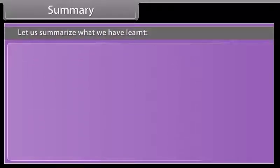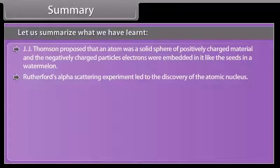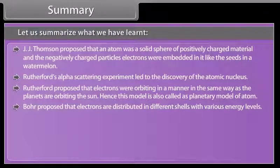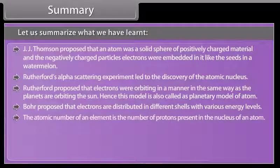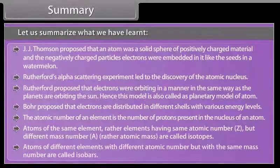Let us summarize what we have learned. J.J. Thomson proposed that an atom was a solid sphere of positively charged material with electrons embedded in it like seeds in a watermelon. Rutherford's alpha scattering experiment led to the discovery of the atomic nucleus, and he proposed the planetary model of the atom. Bohr proposed that electrons are distributed in different shells with various energy levels. The atomic number is the number of protons in the nucleus. Isotopes are atoms of the same element with the same atomic number Z but different mass number A. Isobars are atoms of different elements with different atomic numbers but the same mass number.